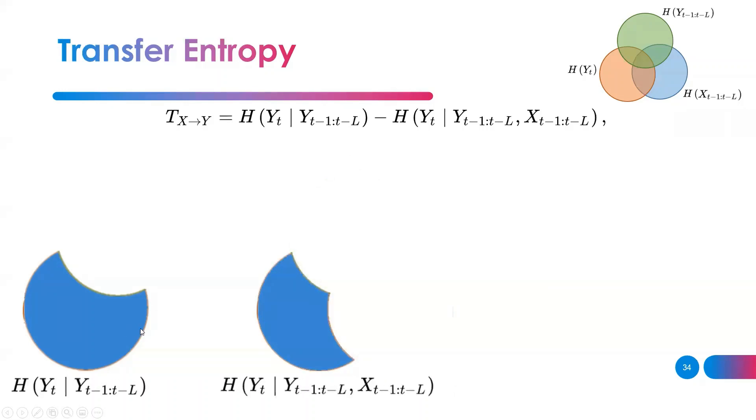Here are the two terms I've shown you in the equation. The transfer entropy is simply the subtraction or the difference between the two: the first term minus the second term. Can you see the difference between the two?